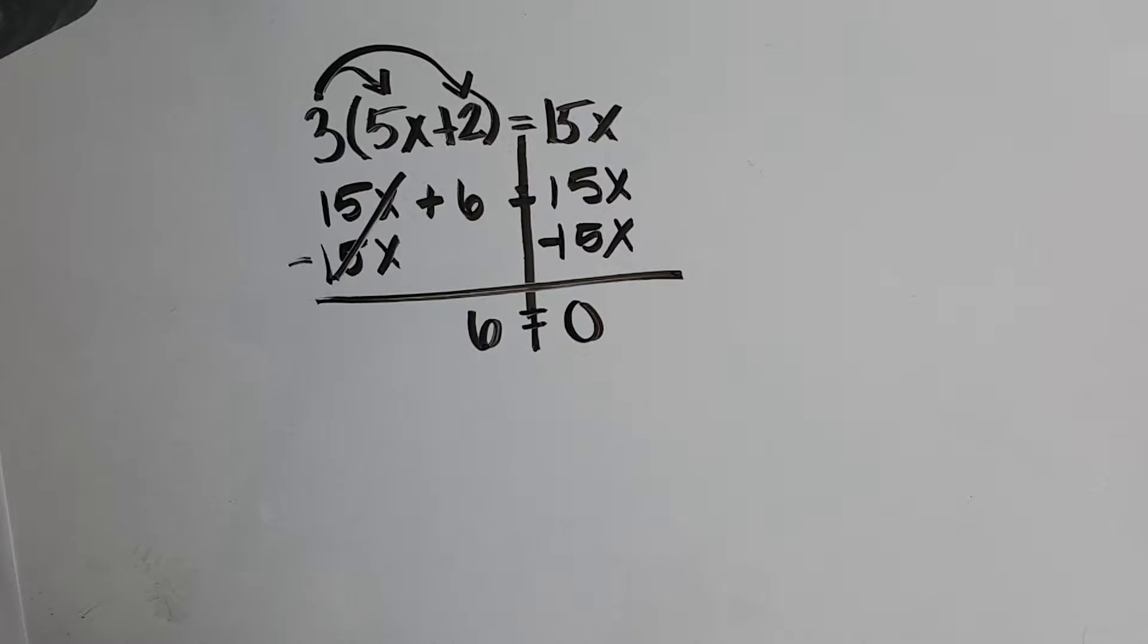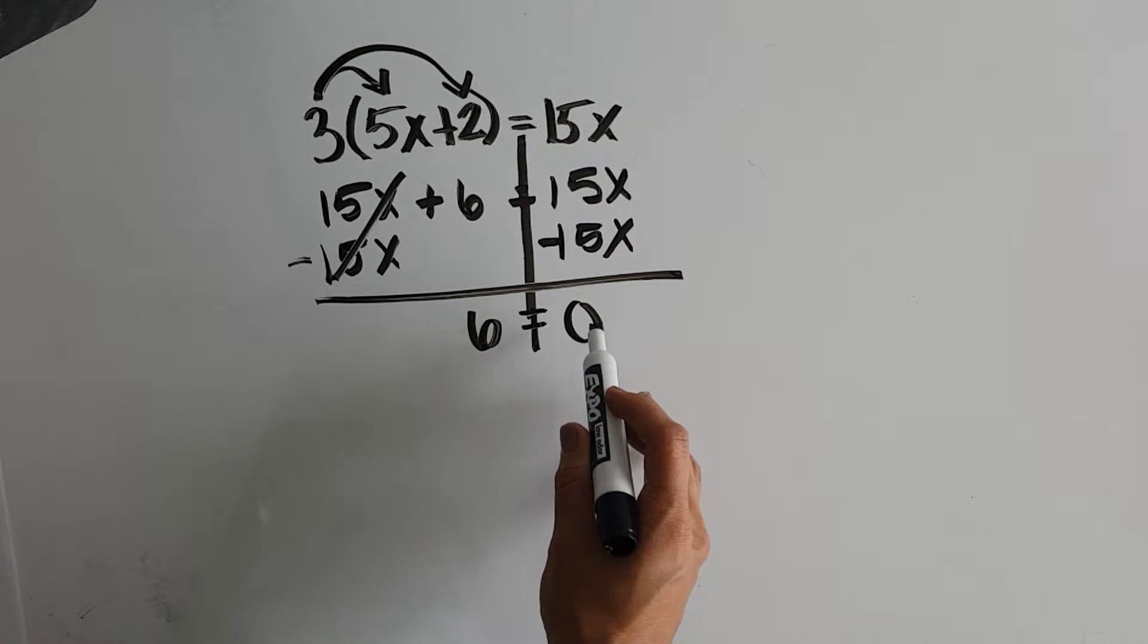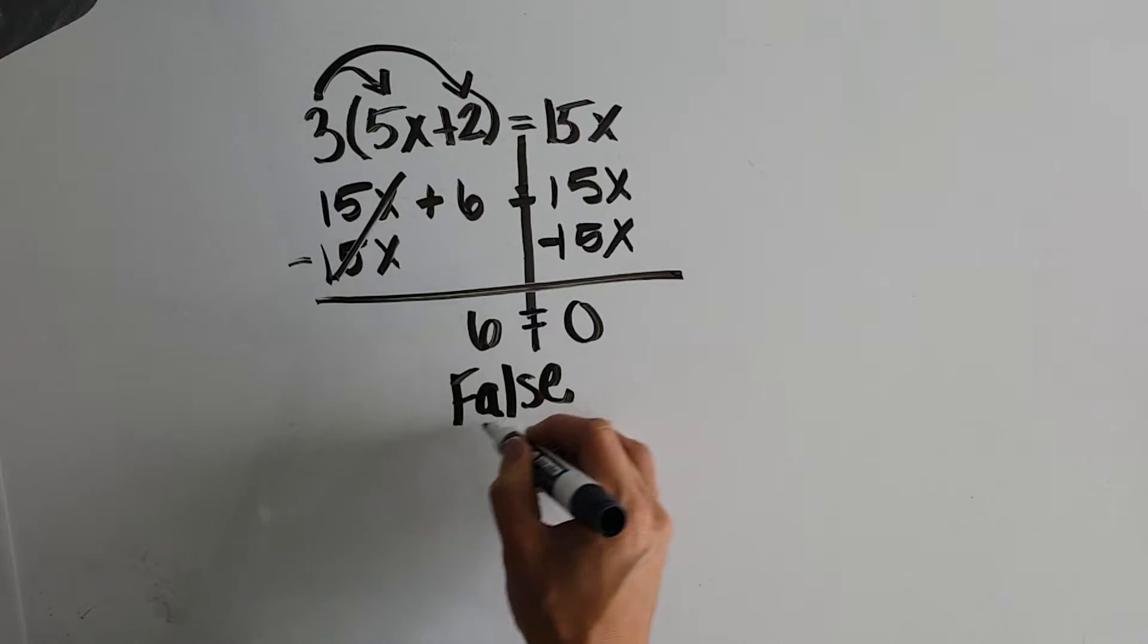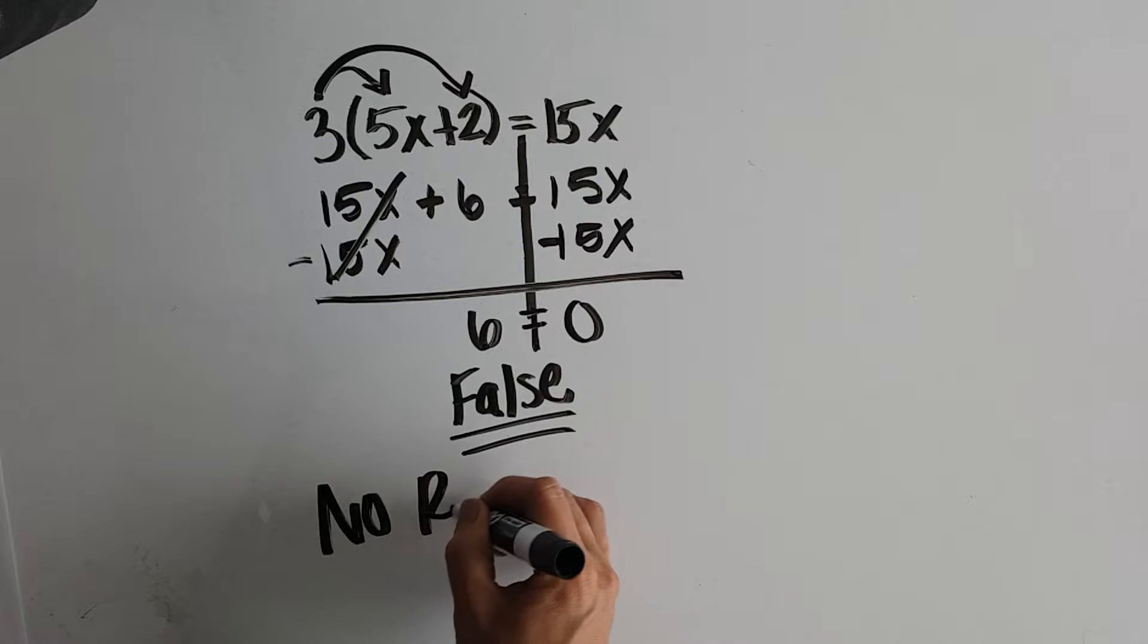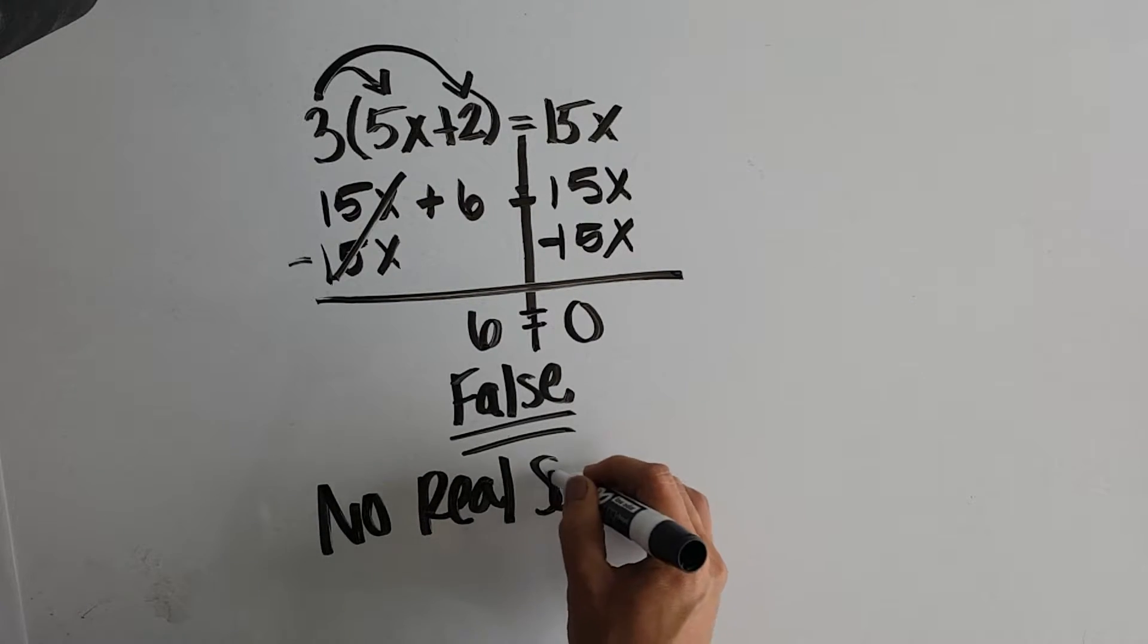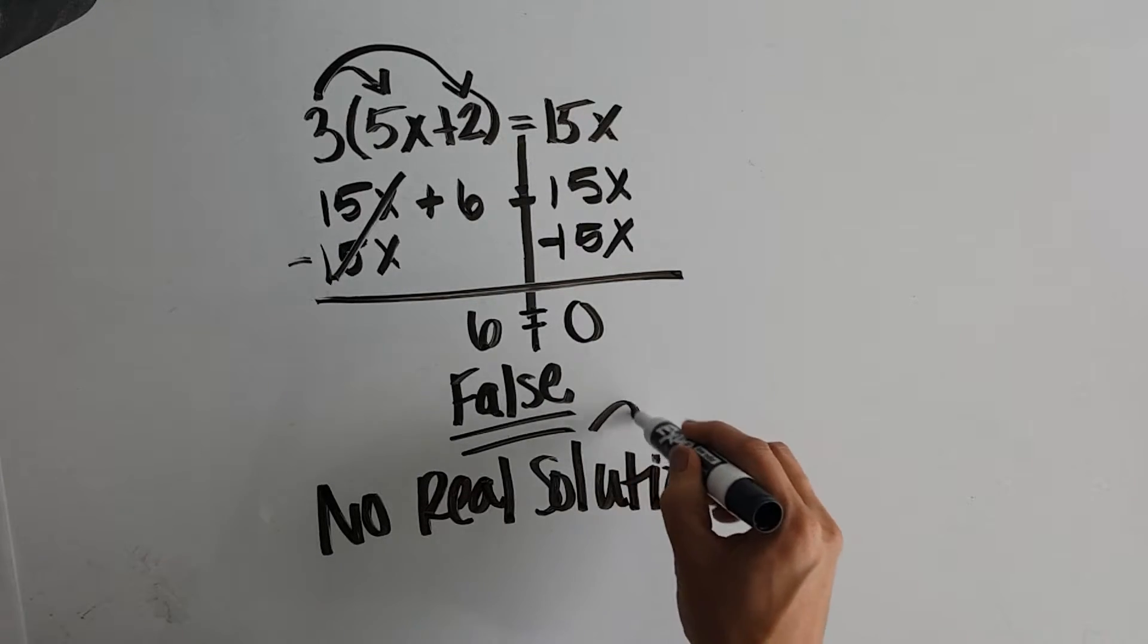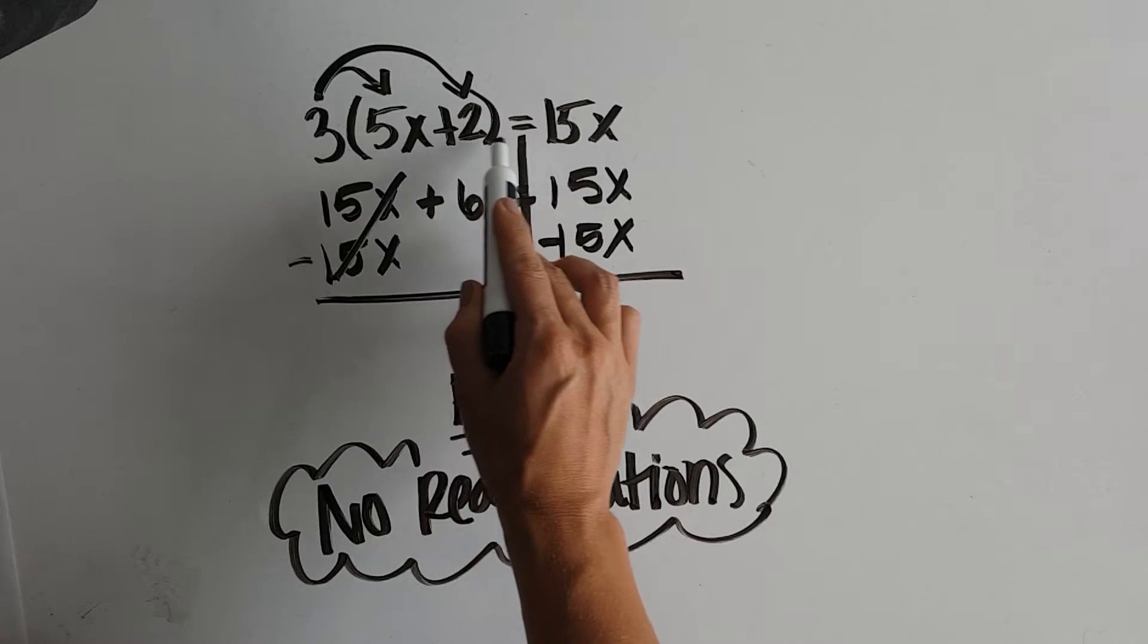Well, time out. All of our variables have canceled out. However, we get a statement that says 6 is the same thing as 0, which is not true. So when we end up with a statement that's false, that means we have no real solutions. So it doesn't matter what x is. There is never going to be a value that would make this original equation true.